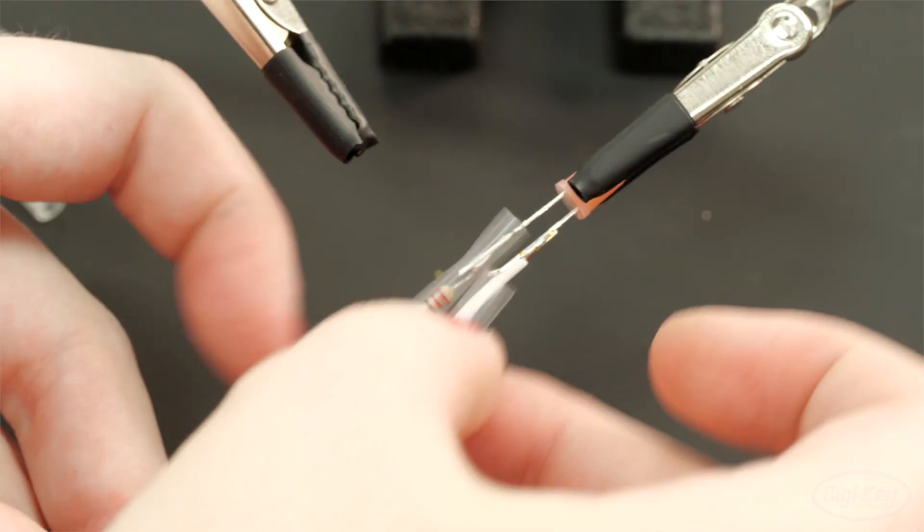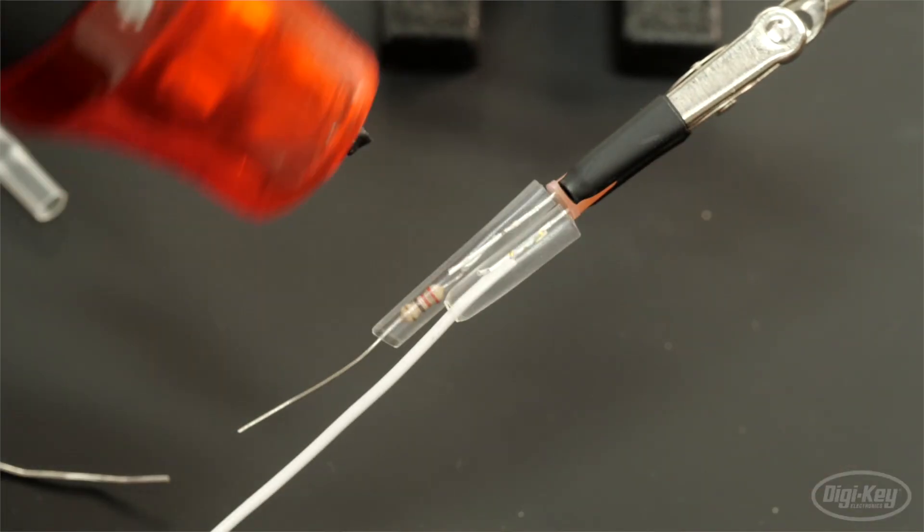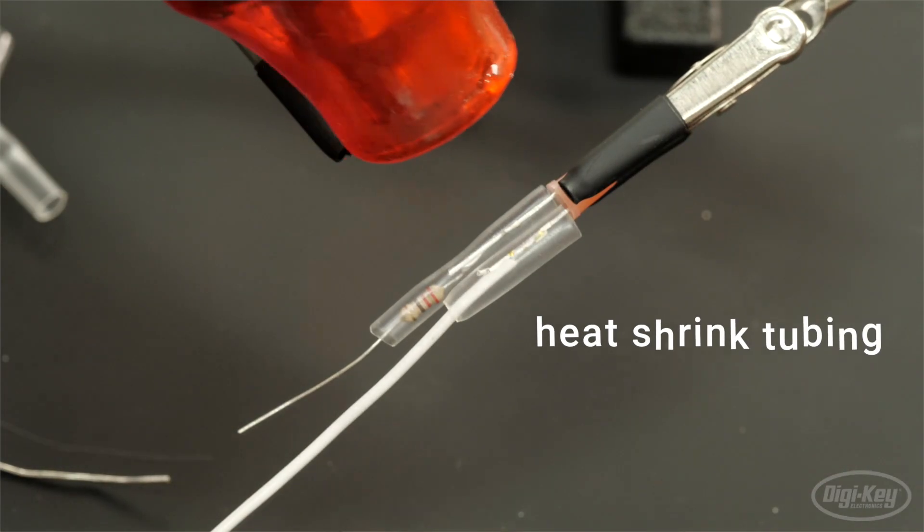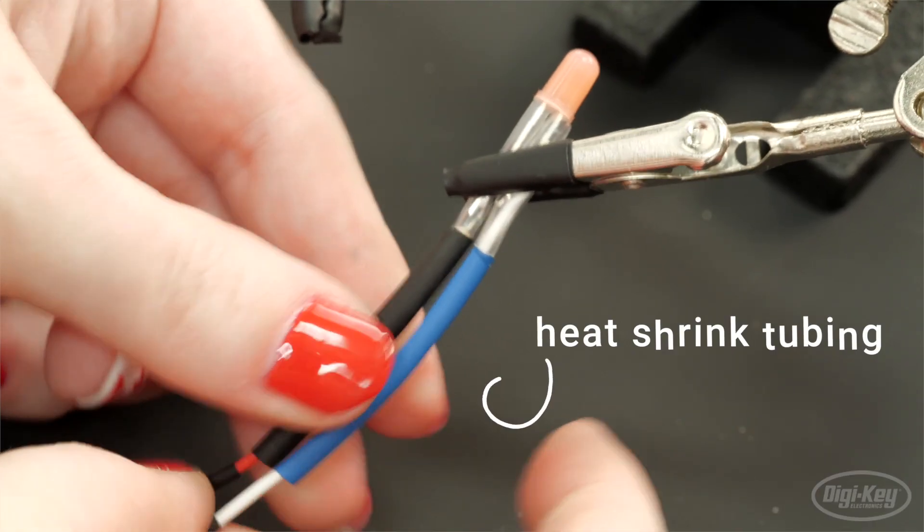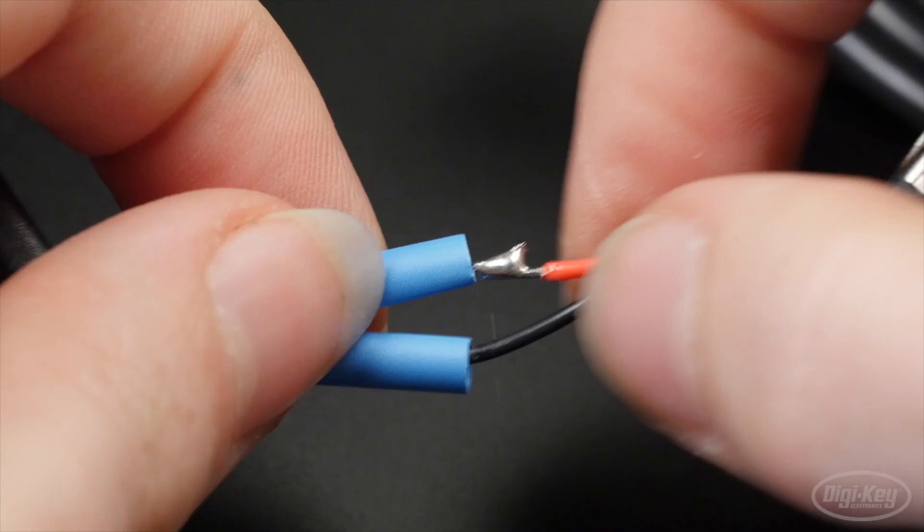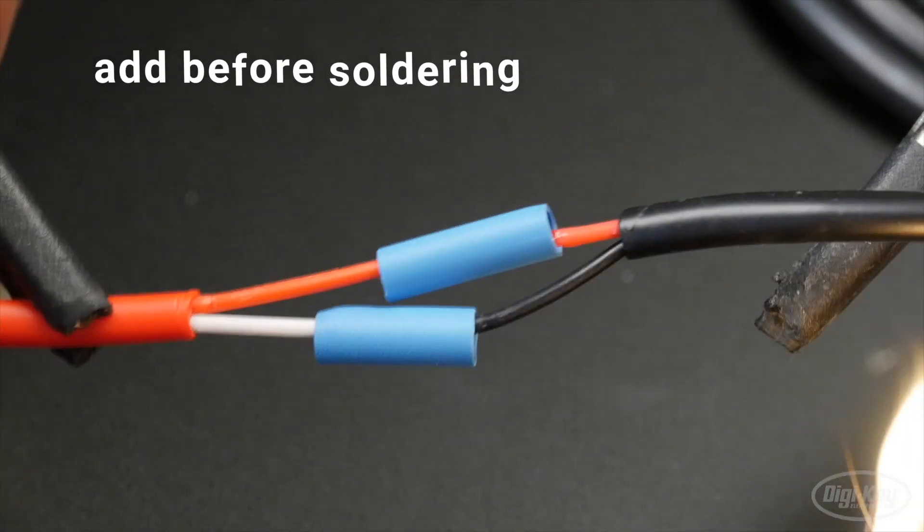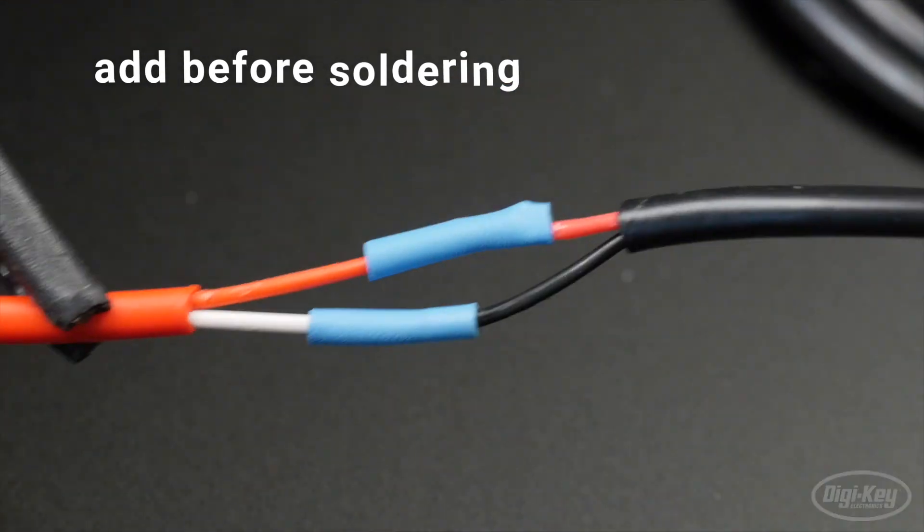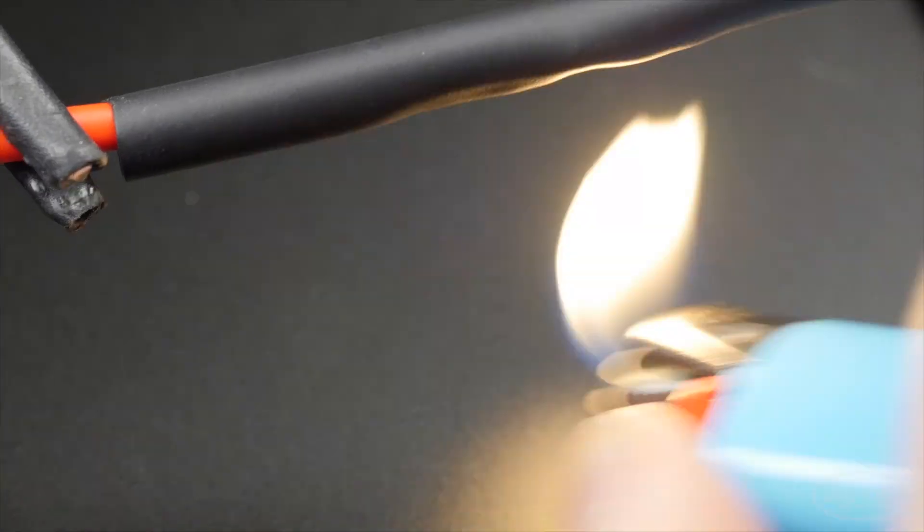To protect your solder joints from shorting out against each other or nearby conductors, it is wise to use heat shrink tubing over any applicable solder joints. For splicing multi-wire cables, you can offset the joints and use multiple nesting sizes of heat shrink to tidy up and protect the entire thing.